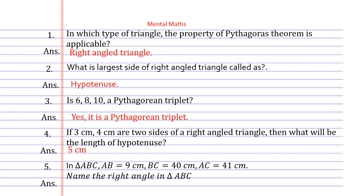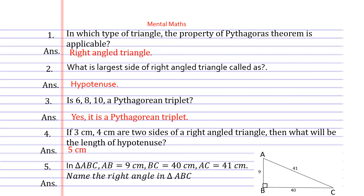The last answer is angle B. To identify the right angle from the given sides, check which is the largest side — that is AC. In triangle ABC, AC is the longest side, so it is the hypotenuse. The remaining vertex is B, so angle B is opposite to hypotenuse AC. Since the side opposite to the right angle is called the hypotenuse, angle B is the right angle.